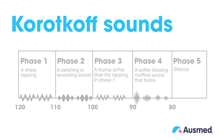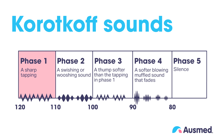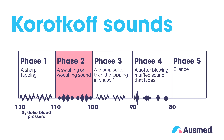Phase 1: This is the first sound heard as the cuff pressure is released. This sound provides the systolic pressure reading. Phase 2: Swishing sounds as the blood flows through the blood vessels as the cuff is deflated.